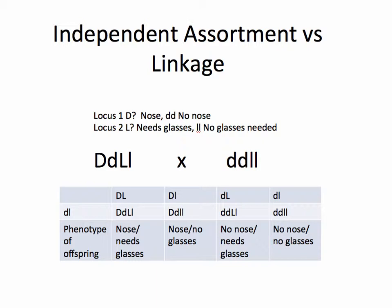With that, let's analyze the following cross the way we normally do it with a Punnett square. I'm going to take a Mr. Potato Head who is heterozygous: big D, little d, big L, little l — so we've got our two gene pairs. And we're going to cross that with a Mr. Potato Head that is homozygous recessive for both sets of genes: little d, little d for the nose locus, and little l, little l for the glasses locus.